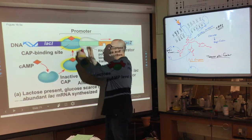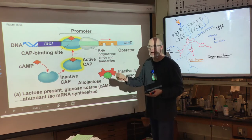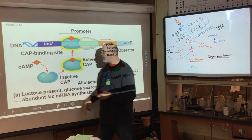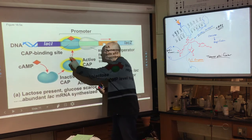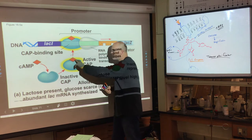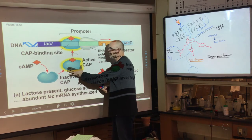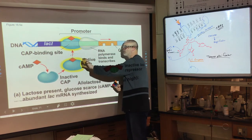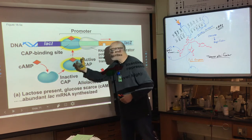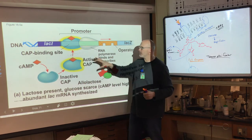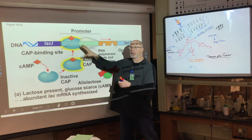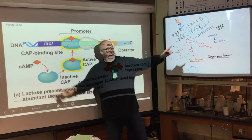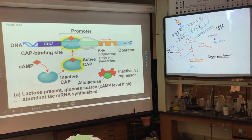When glucose is present, the cell is efficient and doesn't produce much cyclic AMP, so the CAP protein doesn't bind to the promoter region. Even though the repressor might be off, RNA polymerase doesn't have the extra help to bind, so it doesn't transcribe as much. This shows where these signaling chemicals come from and how they coordinate gene regulation.